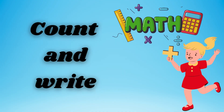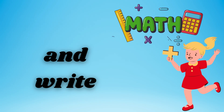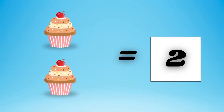Count and write. Count the candies: 1, 2, 3 — equal to 3 candies. Count the cupcakes: 1, 2 — equal to 2 cupcakes.